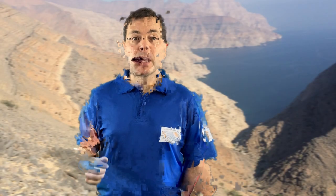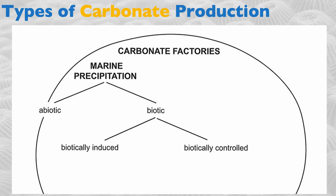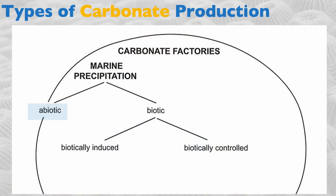We can divide carbonate factories into multiple types. We will focus on marine carbonates in this class. Lacustrine carbonates exist, but except for some exceptions in the South Atlantic, they're not extremely common. Marine carbonates can precipitate from an abiotic source — this is a cement. We've seen in the previous class that chemistry and pH determine whether carbonates will precipitate. But the largest volume of carbonate sediments comes from biotic precipitation, meaning from processes controlled by biology.